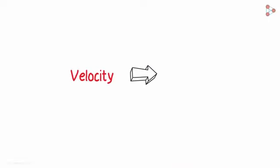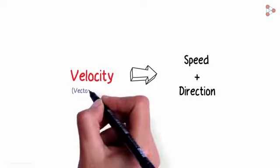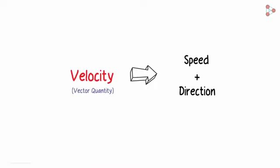Do you remember what velocity is? It's speed with direction and it's hence a vector quantity. Why is this important?